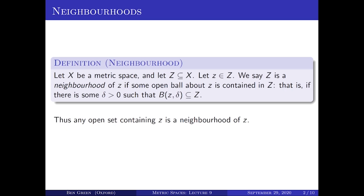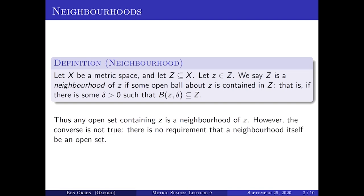Certainly any open set that contains z is a neighbourhood of z, and that follows straight away from the definition of open set: if I've got an open set U that contains a point z, then by definition it also contains a ball about z. However, neighbourhoods don't have to be open sets. It could be some highly closed or discrete set — there's no requirement that a neighbourhood itself be an open set.